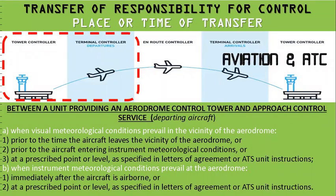Transfer of responsibility for control based upon place or time of transfer: between a unit providing aerodrome control and approach control service for departing aircraft, when visual meteorological conditions prevail in the vicinity of the aerodrome, the aerodrome control tower will release the departing aircraft to the approach control unit prior to the aircraft leaving the vicinity of the aerodrome, or prior to entering instrument meteorological conditions, or at a point or time specified in a letter of agreement or in the air traffic service unit local instructions.